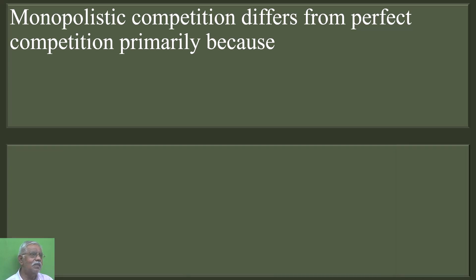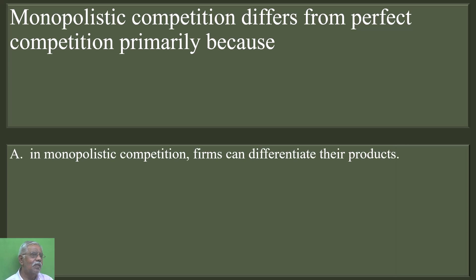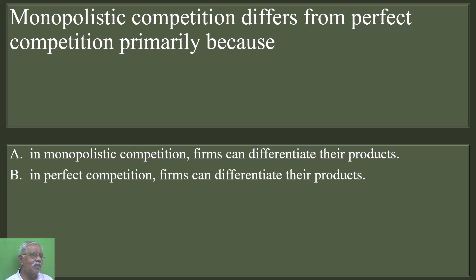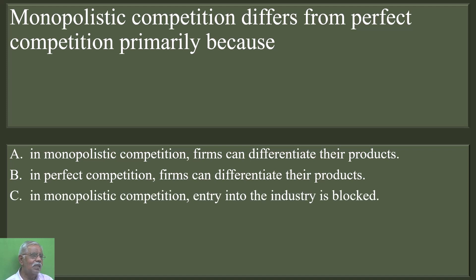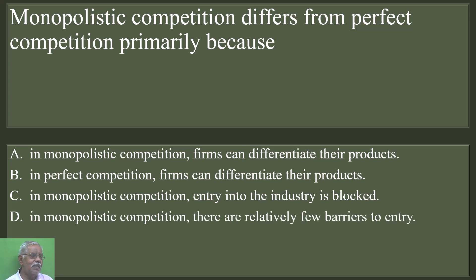Monopolistic competition differs from perfect competition primarily because in monopolistic competition, firms can differentiate their products. In perfect competition, firms cannot differentiate their products. In monopolistic competition, entry into the industry is not blocked — there are relatively few barriers to entry. Option A is correct: in monopolistic competition, firms can differentiate their products.